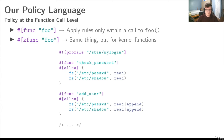One of BPFbox's more unique features is its ability to augment policy with additional context. A special func directive is used to specify that a block of rules should only apply within a call to a given user space function. The kfunc directive does the same thing, but with a kernel function instead. In this example, we have a simplified profile for a login program. It's allowed to read /etc/passwd and /etc/shadow within a call to the check-password function, and is allowed to read and append to shadow and passwd within a call to the add-user function. In all other instances, these access patterns would be denied.